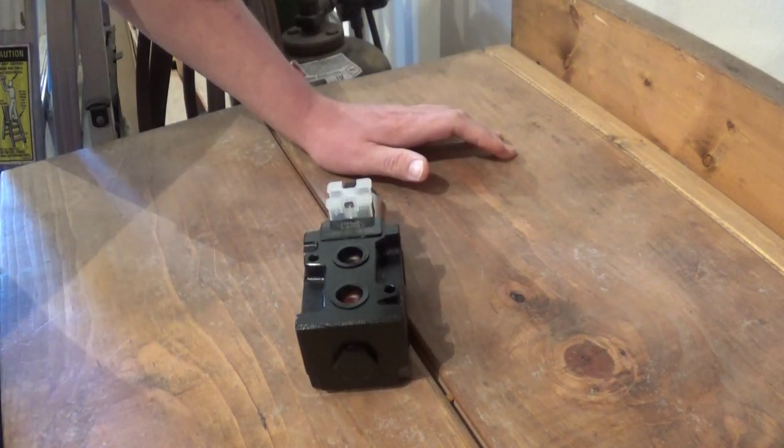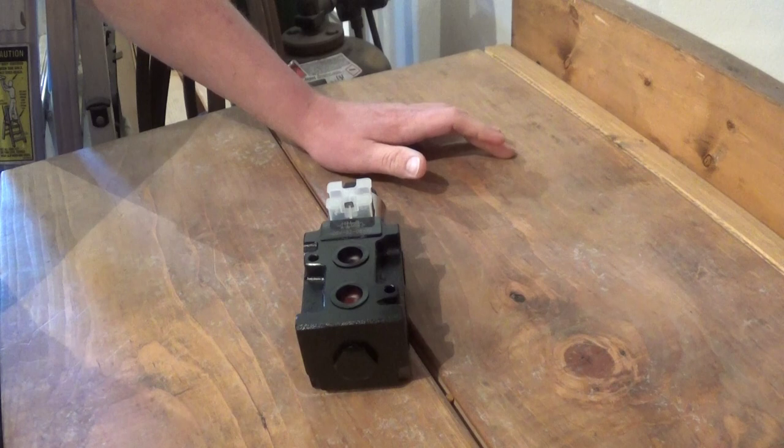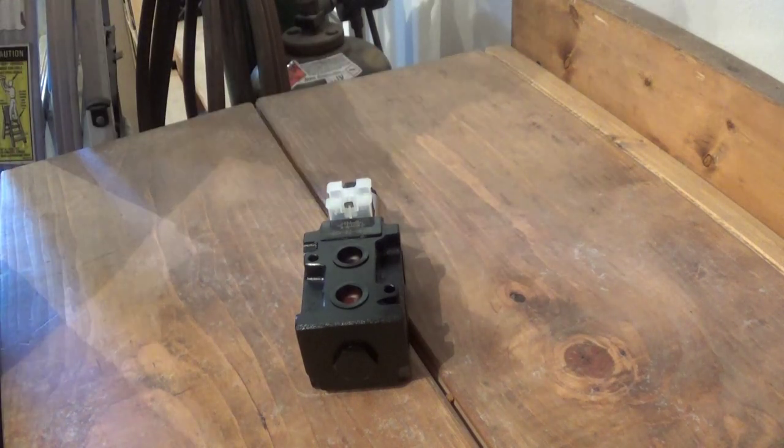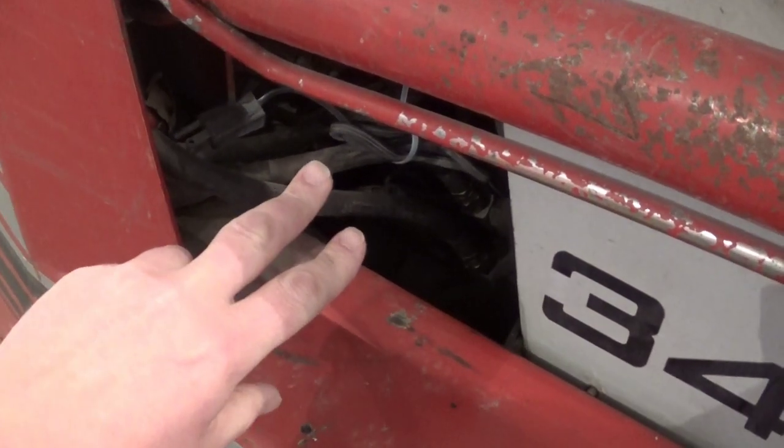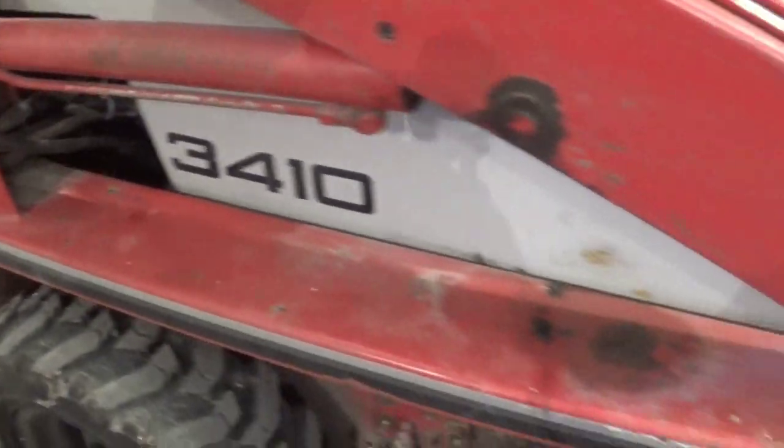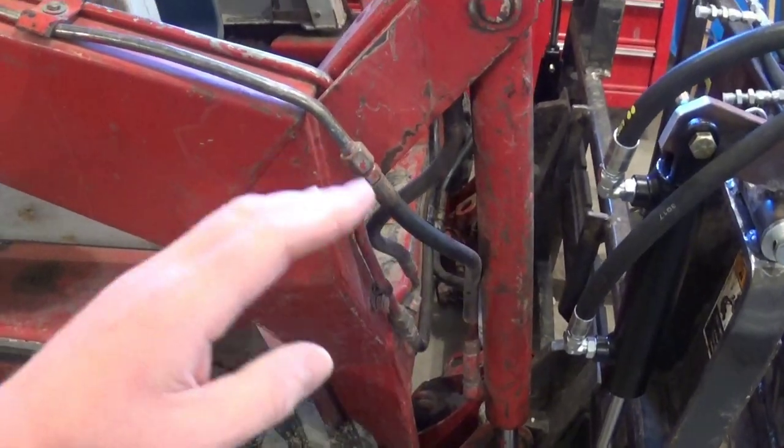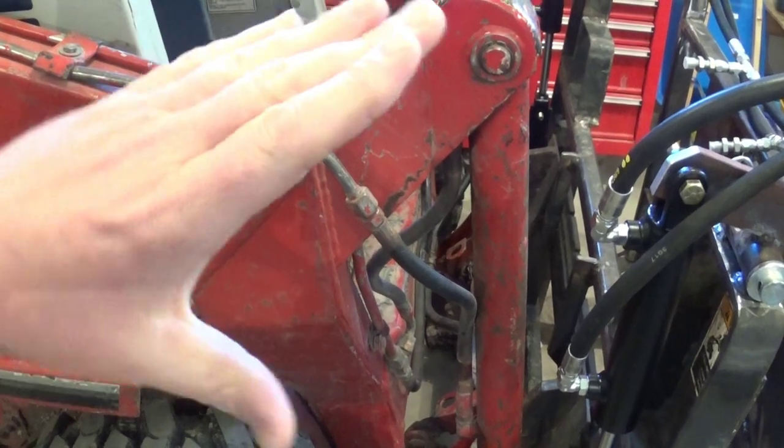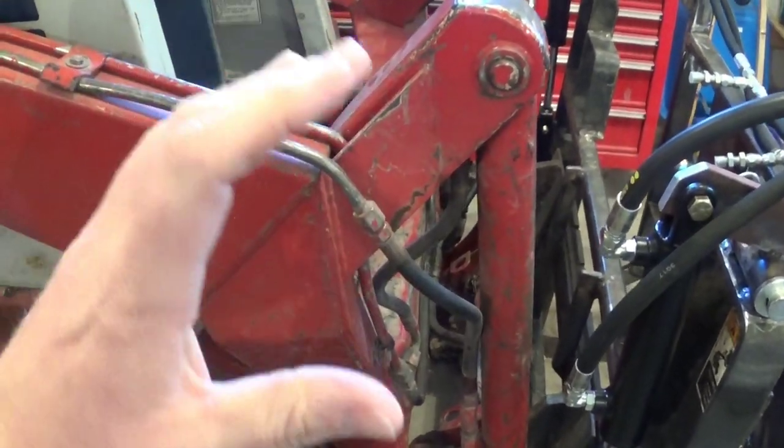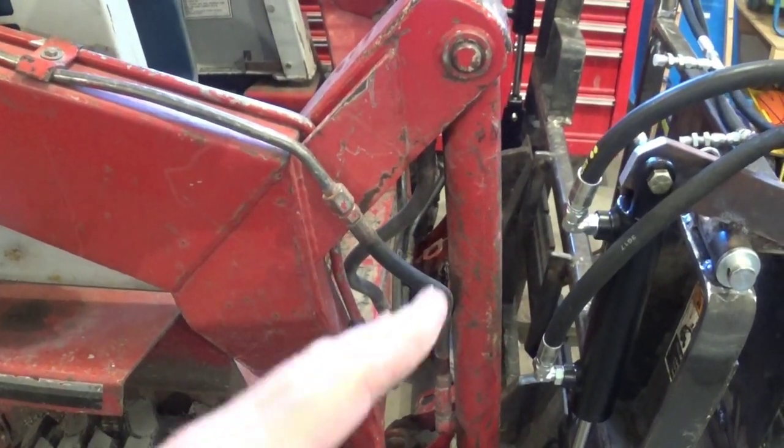So what you're going to do is find a set of hydraulic hoses on your unit that you want to share with another device. I've chosen to use these two lines right here. These run up to the front of my skid steer and they run the tilt cylinders. These are what make your pallet forks tilt or your bucket dump.